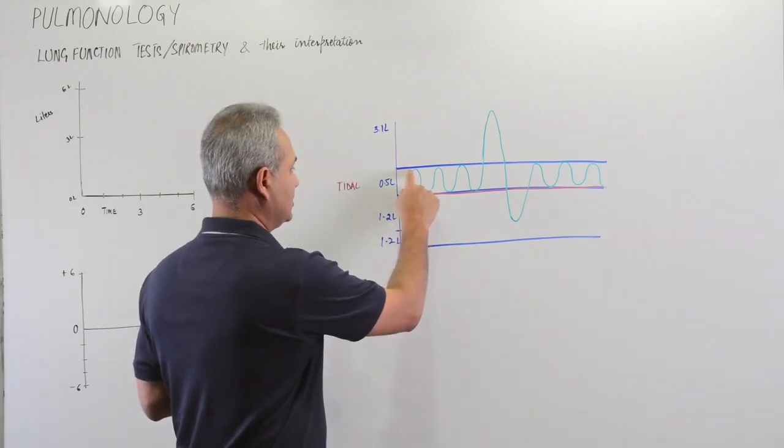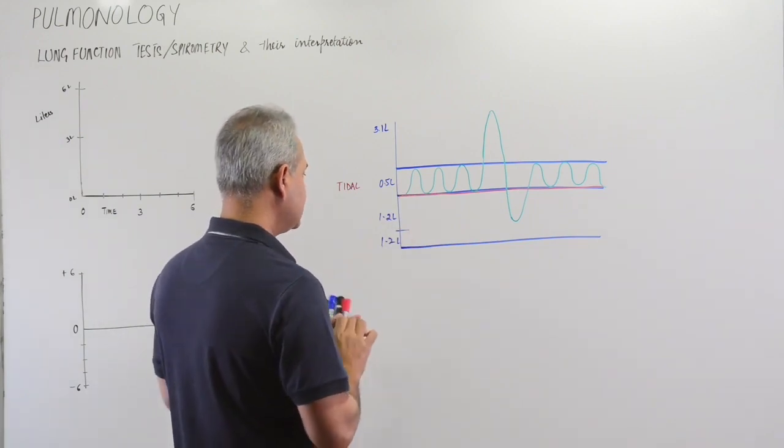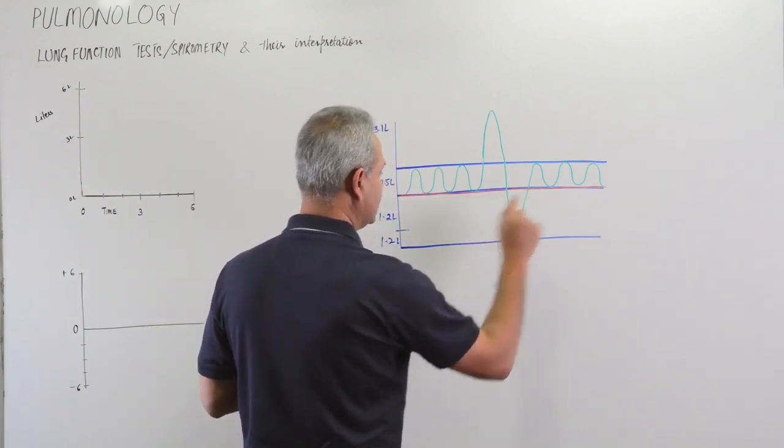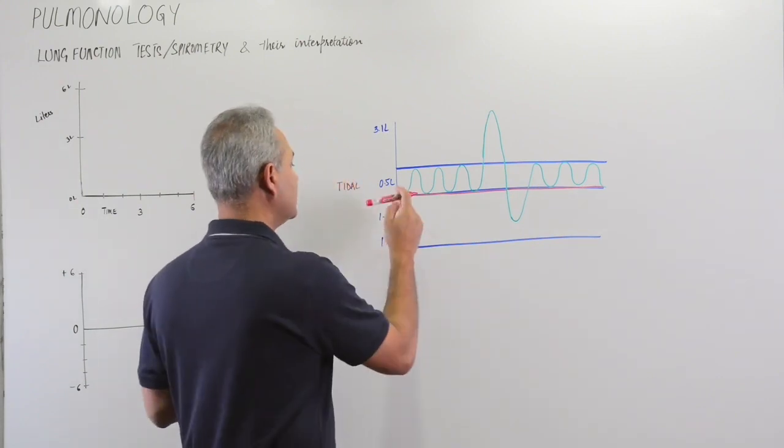This red line here is very important. Why is this important? This line indicates functional residual capacity or FRC.